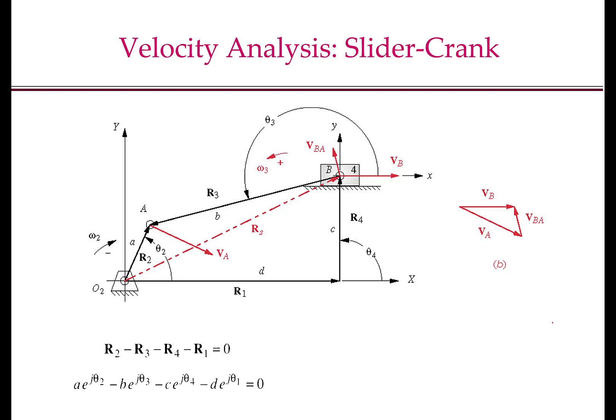The procedure for solving the velocity kinematics problem for the slider crank mechanism is analogous to what we did for the four-bar mechanism. We will start with the loop closure equations. So r2 is our vector o2a, r1 is our vector o2c, r4 is the vector cb, and r3 is the vector ba. The loop closure equation at the position level says that r2 equals r1 plus r4 plus r3, or r2 minus r3 minus r4 minus r1 equals zero.